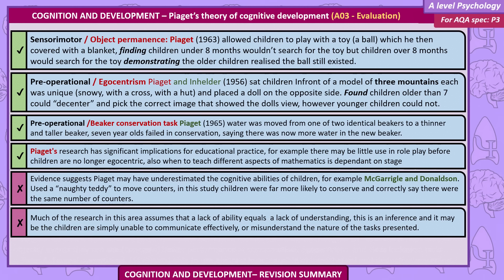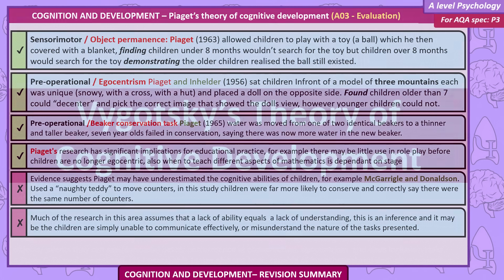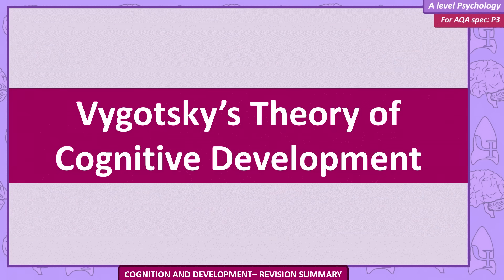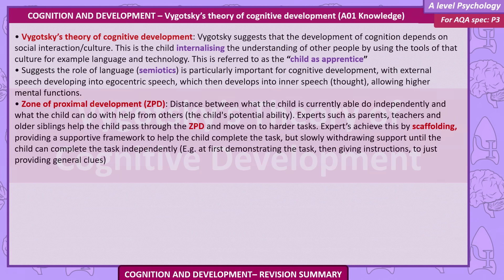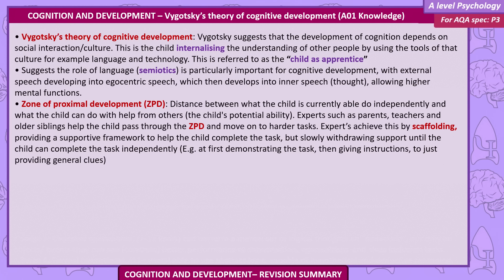Vygotsky's Theory of Cognitive Development. Vygotsky suggests that the development of cognition depends on social interaction and culture. This is the child internalising the understanding of other people by using the tools of that culture — for example, language and technology. This is referred to as child as apprentice.